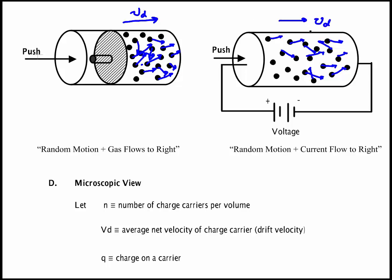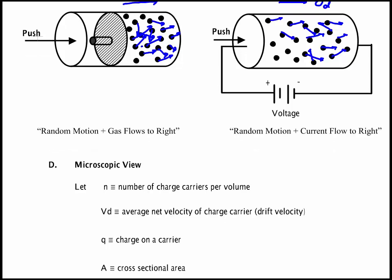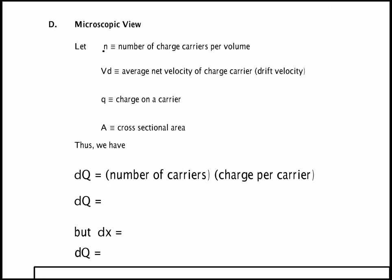Now to get a quantitative measurement of that we're going to look at some material properties. First the microscopic view: we're going to define n as the number of charge carriers per volume. This is related to the number of atoms and hence to the density, and different materials have different numbers of these. Vd is the drift velocity of the charge. Q is the charge on the carrier. If it's an electron that's e, but these could also be gas ions in a liquid or in a plasma gas so there could be something like 2e. And then we have the cross sectional area A.